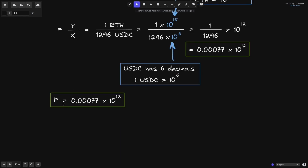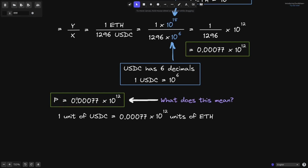So we calculated that P is equal to 0.00077 times 10 to the 12. What this number is saying is that one unit of USDC is equal to 0.00077 times 10 to the 12 units of ETH. One unit of USDC is equal to 1 over 10 to the 6.